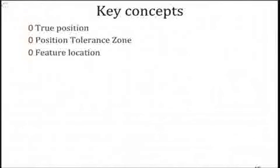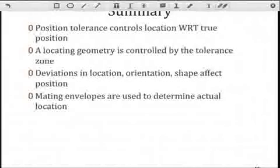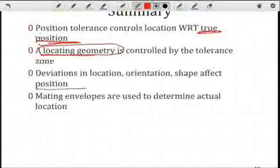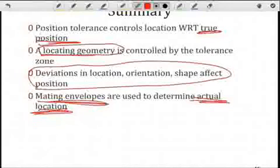In summary, you should understand the notion of true position — the nominal location we're trying to control — and what a position tolerance zone looks like in terms of shape, size, orientation, and position. You need a datum reference frame to locate true position. The locating geometry on the feature is controlled by the tolerance zone. Deviations in location, orientation, and shape are cumulative and all contribute to the position of a feature. Mating envelopes are used to determine actual location, and actual location is determined without orienting the mating envelope — we find the locating geometry with respect to the datum reference frame.